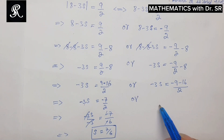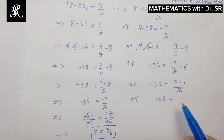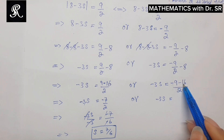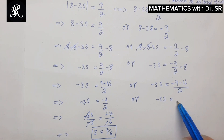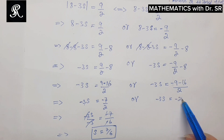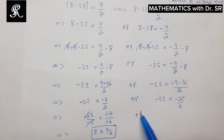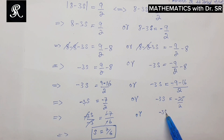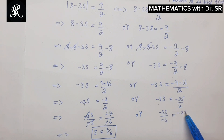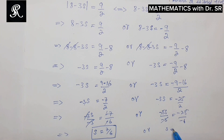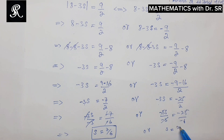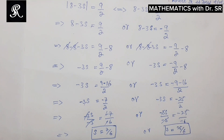For the second equation, we have negative 3s equals negative 9 minus 16 over 2, which simplifies to negative 25/2. We shift the 3 to the other side and divide by negative 3, giving negative 6 in the denominator. So s equals 25/6. This is the second solution.